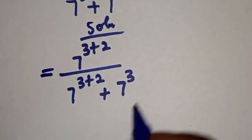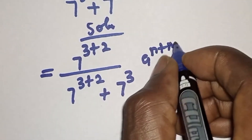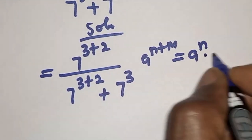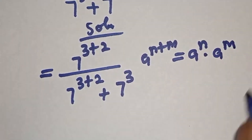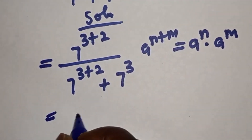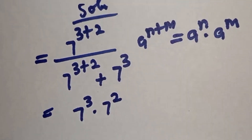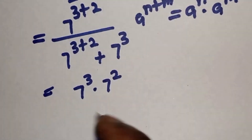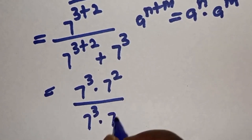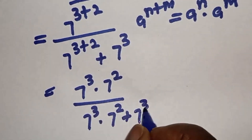Then, remember this rule: if you have a raised to power n plus m, this is equal to a raised to power n multiplied by a raised to power m. So we have 7 raised to power 3 multiplied by 7 raised to power 2, over 7 raised to power 3 multiplied by 7 raised to power 2 plus 7 raised to power 3.